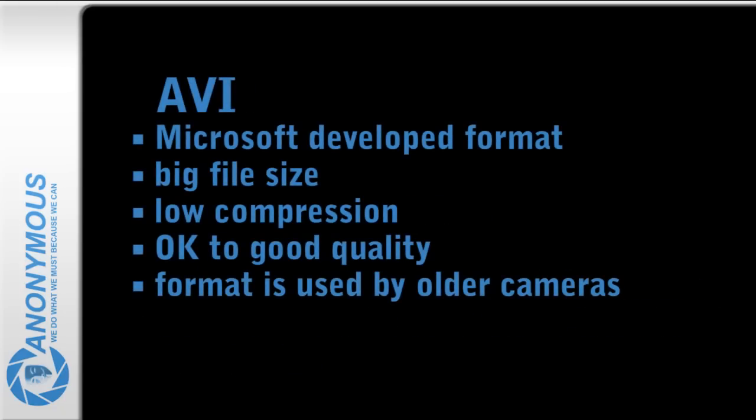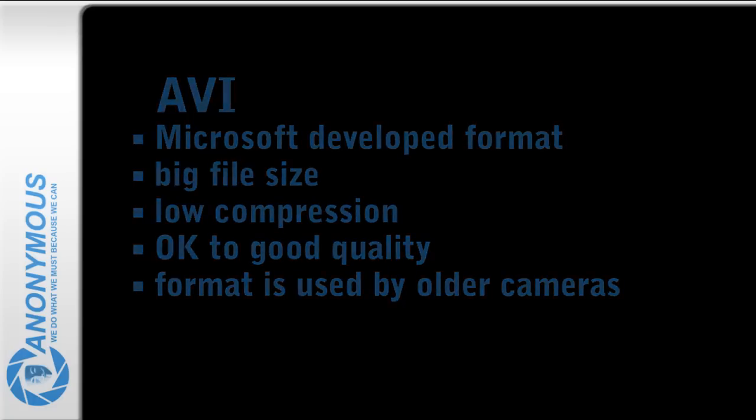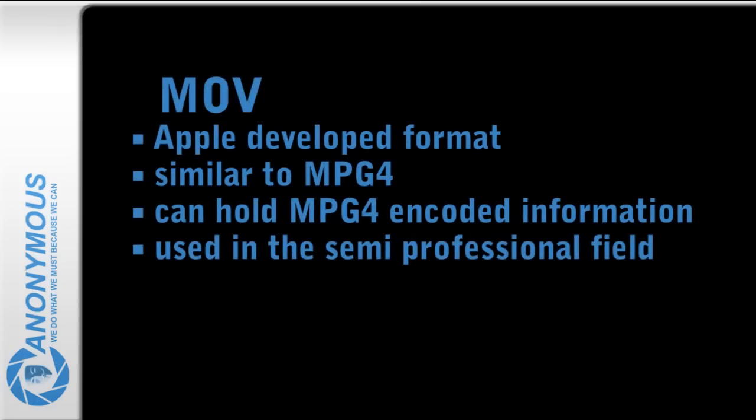The only downside of MP4 is that it requires a lot of CPU power to decode and play the video. AVI is a Microsoft-developed format and is large in file size, which results from its low compression. The quality it delivers ranges from OK to good, and it is a format sometimes used by older video cameras. MOV is a format developed by Apple, similar to MP4, and can hold MPEG4-encoded information. It is used in the semi-professional field.